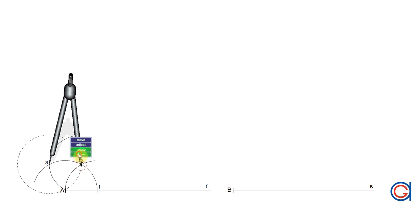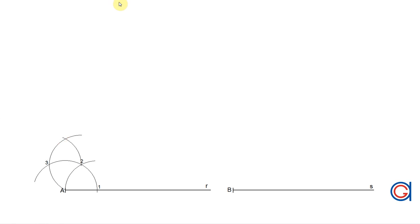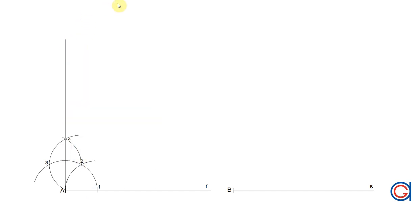And finally setting our compass on point 3 with the same radius we scribe an arc to the left until it cuts the previously drawn arc at a new point which we call 4. So now with a ruler we are going to join point A through point 4, and this line forms our 90 degree angle as shown here.